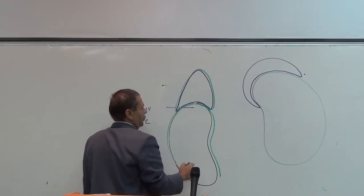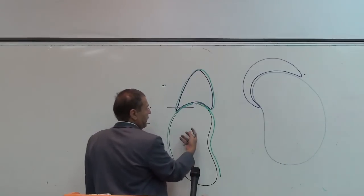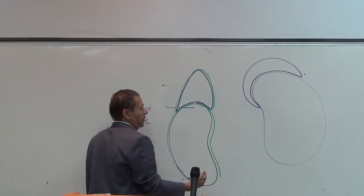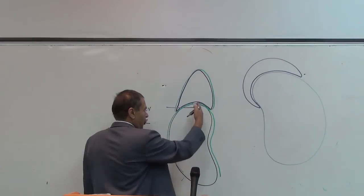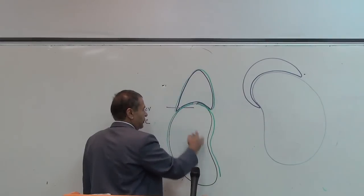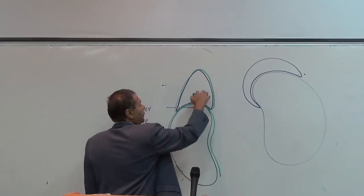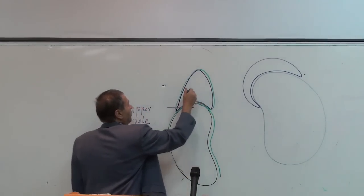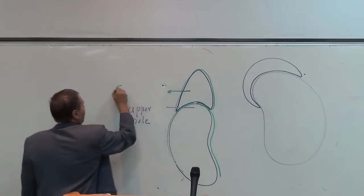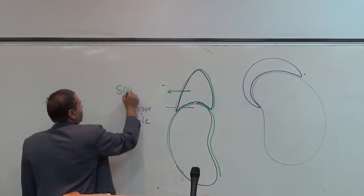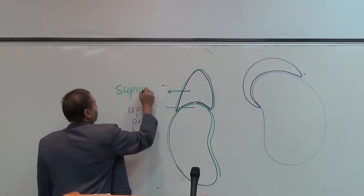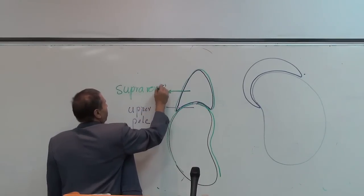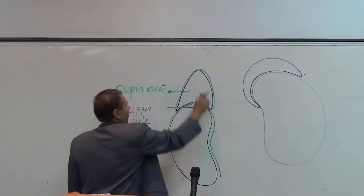So during kidney operation, after opening the renal fascia, I can deliver the kidney without disturbing the suprarenal gland, because it lies in a special compartment of the renal fascia.